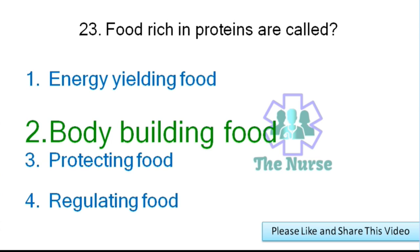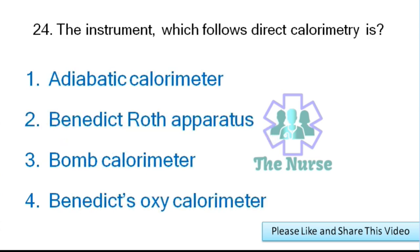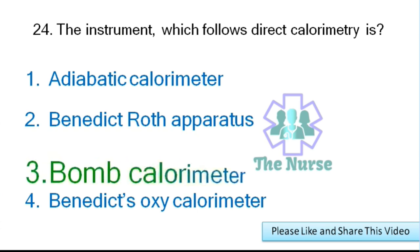Next question: Which instrument follows direct calorimetry? Options: adiabatic calorimeter, Benedict-Roth apparatus, Bomb calorimeter, or Benedict's oxy-calorimeter. Correct answer: Bomb calorimeter.